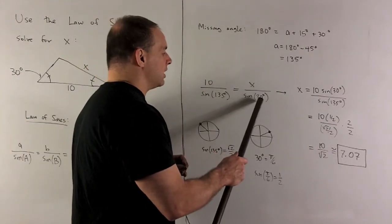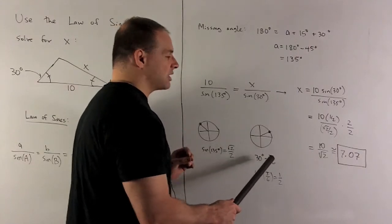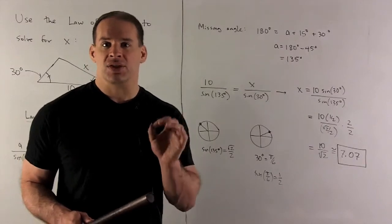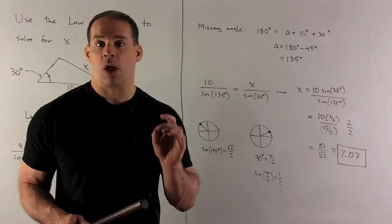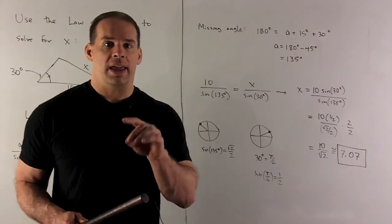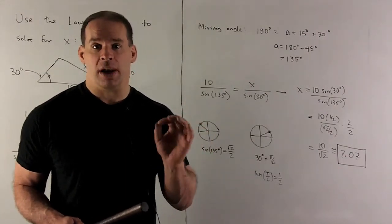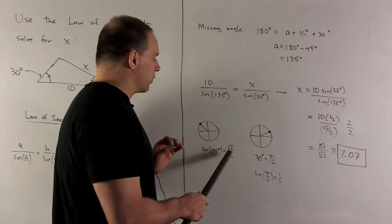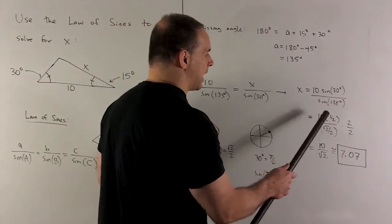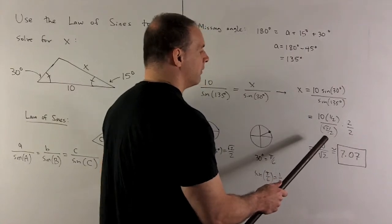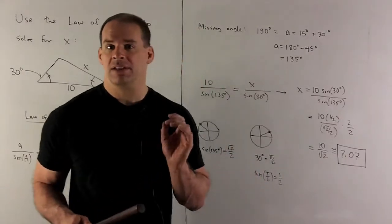Then I go to sine of 30 degrees. That's in the first quadrant. We know that 30 degrees is the same as pi over 6. This is the smaller angle, which means it has the smaller sine, the smaller Y value. The sine is going to be 1 half. So X equals 10 times a half over square root of 2 over 2. That gives me 10 over square root of 2, which is roughly 7.07.